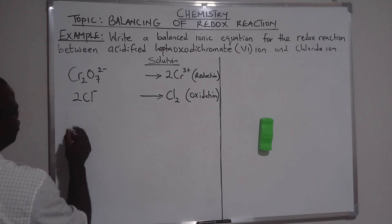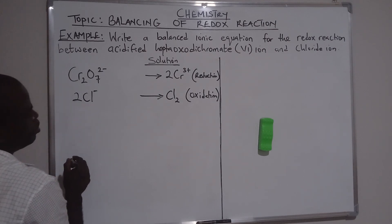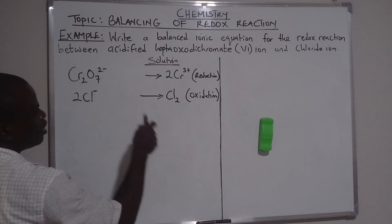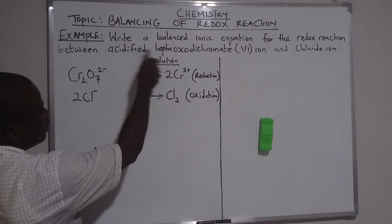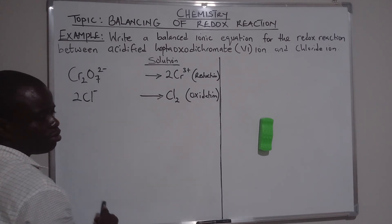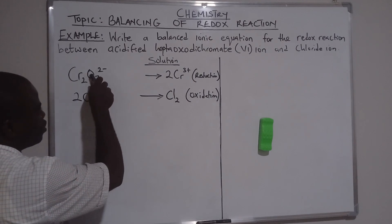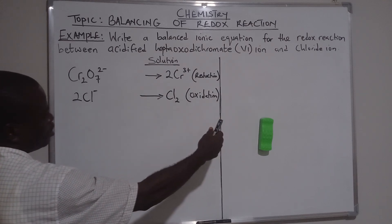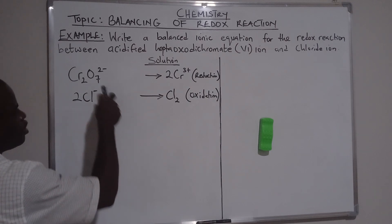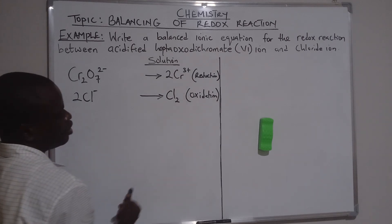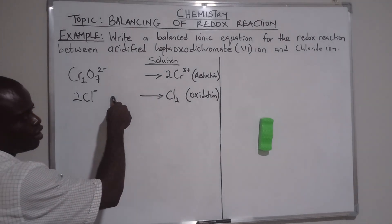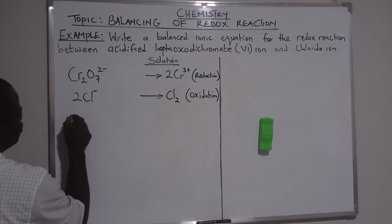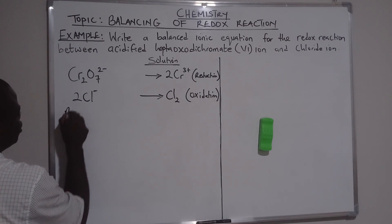Now let's balance the equation. Take note: when you are balancing an acidified compound and you have seven oxygen atoms, you add seven molecules of water on the other side, and then balance with the corresponding number of hydrogen ions.